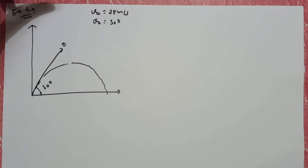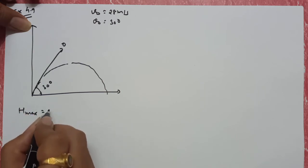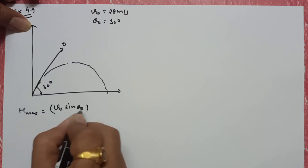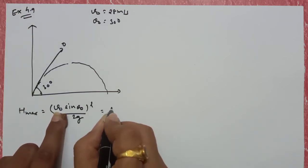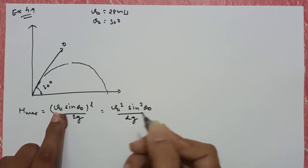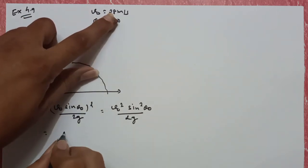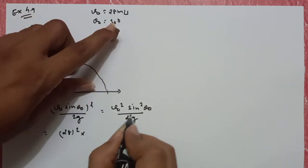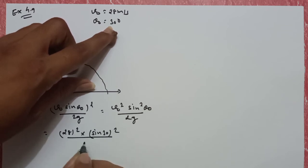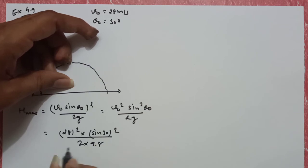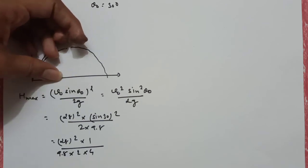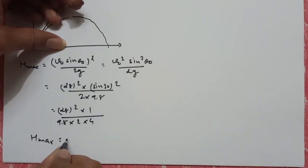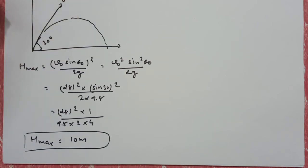Calculate the maximum height. H maximum find करना है, सीधा formula place करो. H maximum का formula: (V0 sin theta0) whole square by 2G, मतलब V0 square sin square theta0 by 2G. So V0 initial velocity थी 28, तो 28 का square into sin square 30, by 2 into G 9.8. तो 28 का square into sin 30 is 1/2, 1/2 का square मतलब 1/4, into 2 into 9.8. So maximum height is 10 meter।